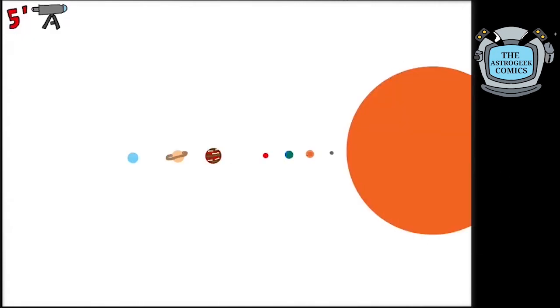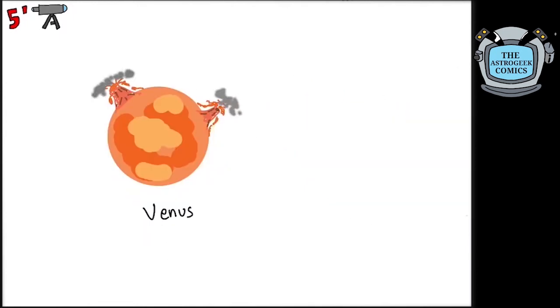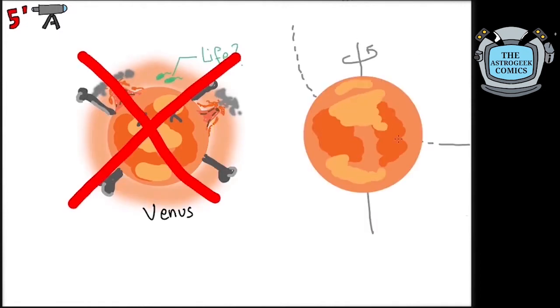Venus is the second planet orbiting the Sun, the hottest in our solar system and is also called the Earth's twin. But today, we will not talk about its volcanoes or the hellish environment or any possibilities of life here, but the way it moves.